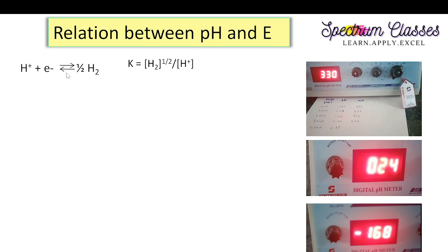Now we write down the equilibrium constant for this reaction. K is equal to [H₂] raised to the power one-half divided by [H⁺] ion concentration. Since H₂ has one atmospheric pressure, this K value simplifies to 1 divided by [H⁺] ion concentration.